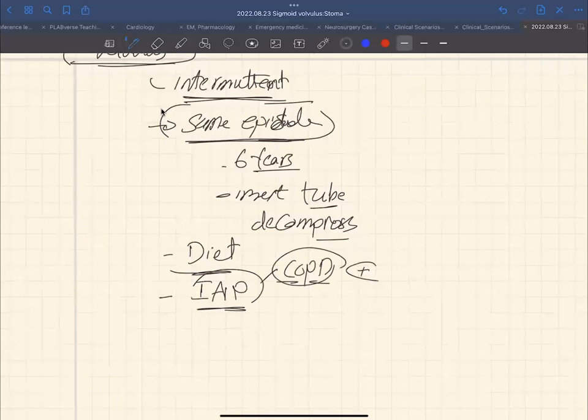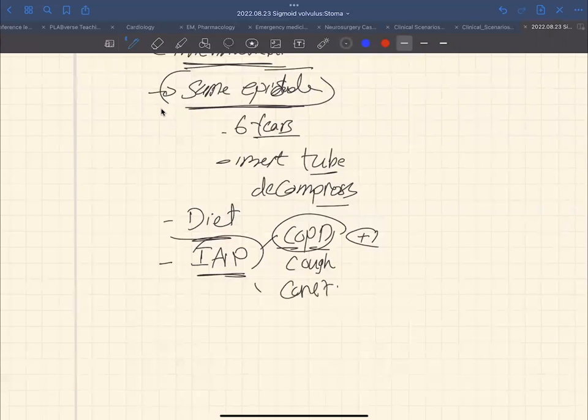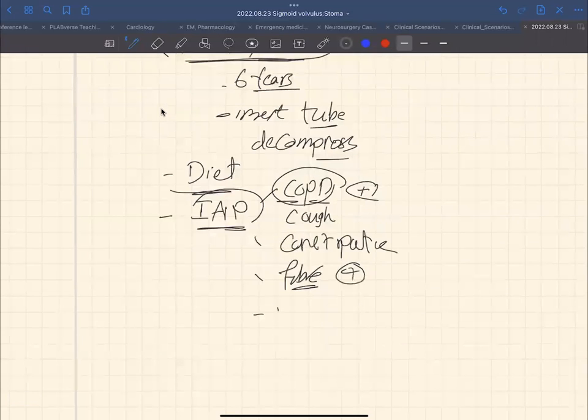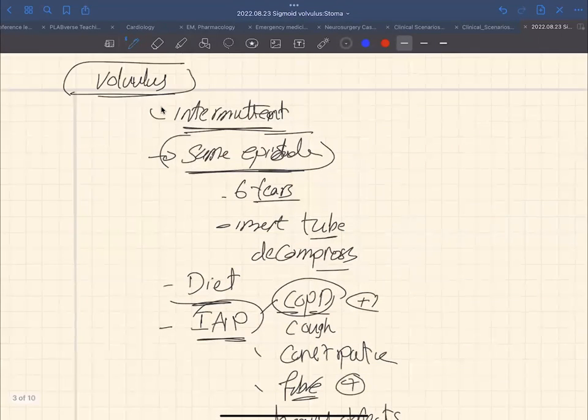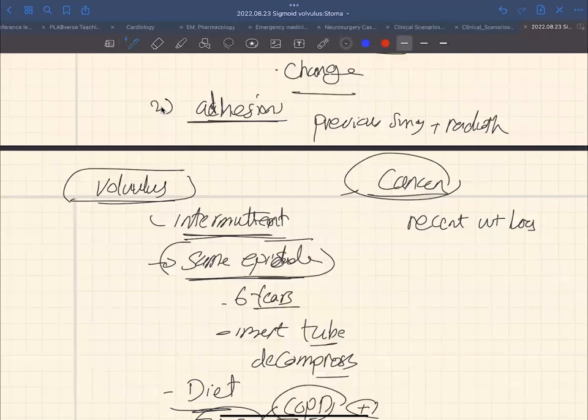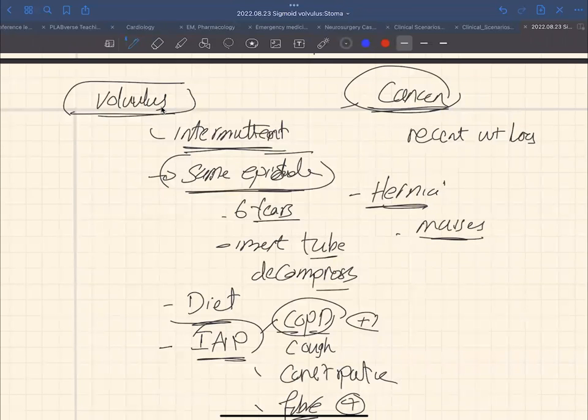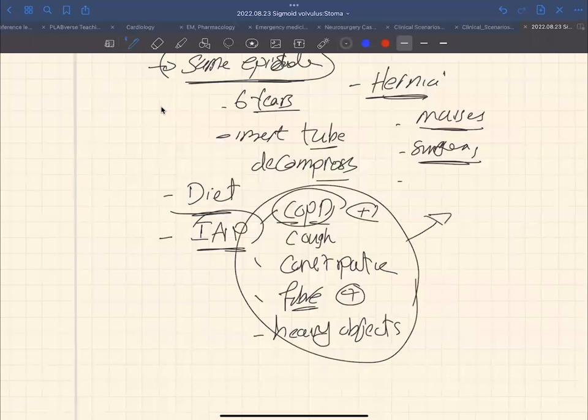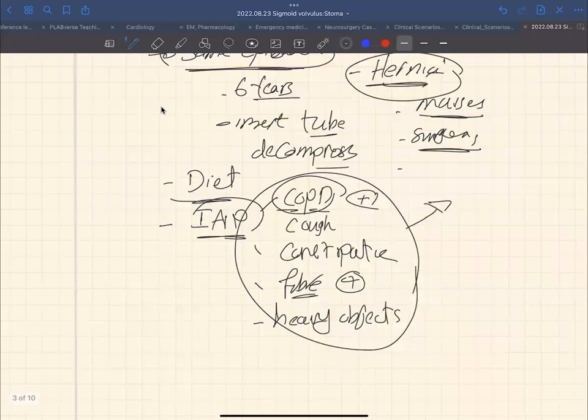So you would ask her about her diet as well as a risk factor. You will ask her about anything that increases intra-abdominal pressure, and this includes any past medical history like COPD. When you ask her about that, this patient does have COPD or chronic cough, basically. You can ask about high fiber diet. She does eat high fiber diet, which is a risk factor. Carrying heavy objects as well. Our patient does not carry heavy objects, but you will need to ask this question.